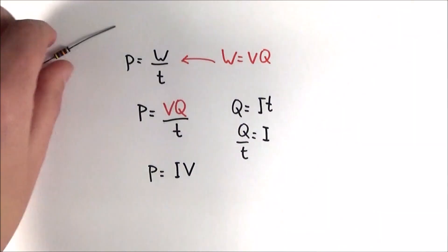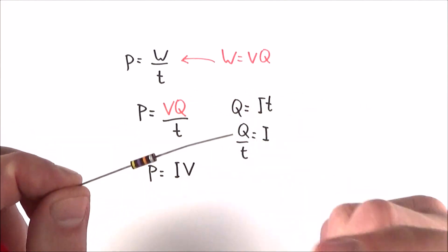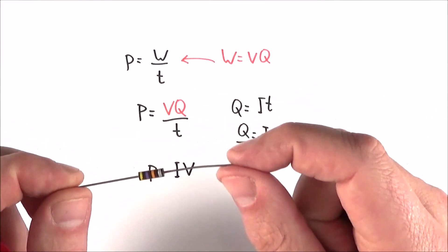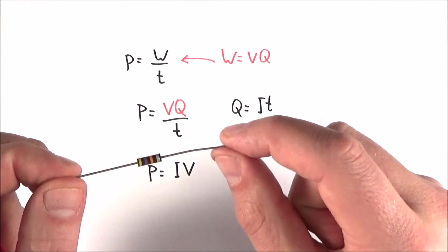Effectively, what it means is, if you have something with a greater current flowing, or perhaps a greater potential difference, then there's going to be a greater amount of energy transferred or dissipated into that component every second, therefore there's greater power.